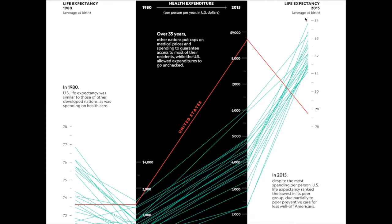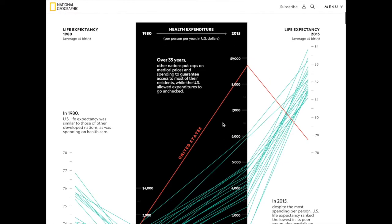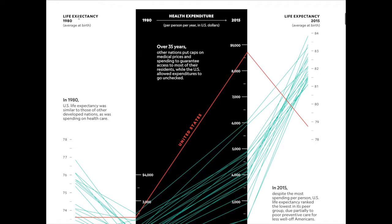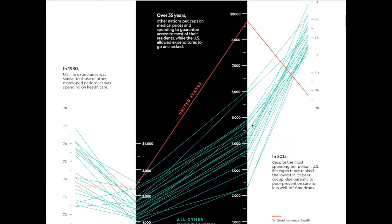Obviously nobody reads the text, right? Normal human beings look at the colors and the lines first. And you see this line where the U.S. is kind of generally following the trend and then suddenly goes up and then suddenly falls all the way down, overtaken by presumably other countries. What is actually going on in this graph? They kind of took a life expectancy chart and split it in half and wedged the health expenditure chart in there, but they preserved the lines — they kept the lines as continuous — which violates...